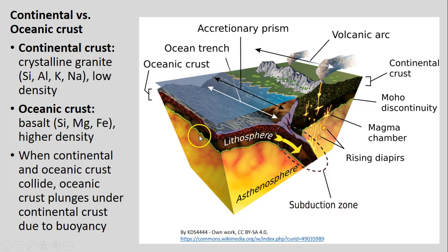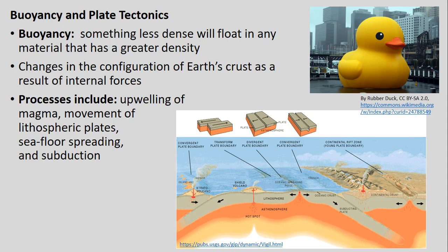When continental and oceanic crust run into each other, that oceanic crust is pushed under — and the continental crust, due to buoyancy, floats above because of its lower density. It's the same idea as why a rubber duck floats on water: the rubber duck is less dense and floats in a material of greater density. This also relates to the age of rocks, as we'll see a little bit later.